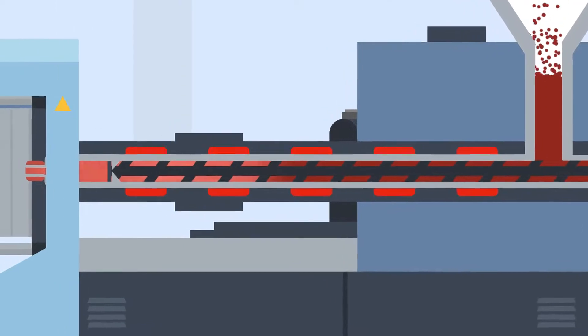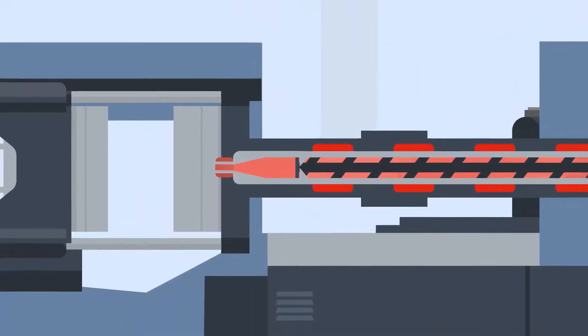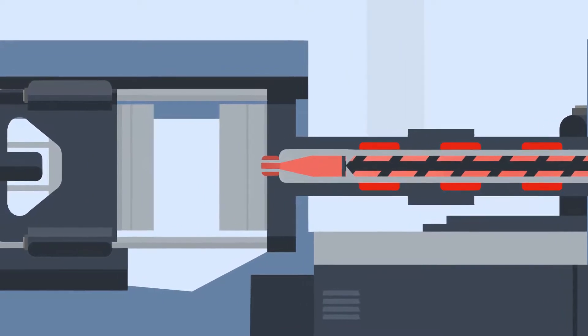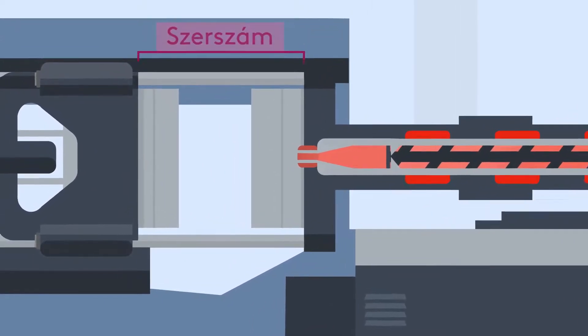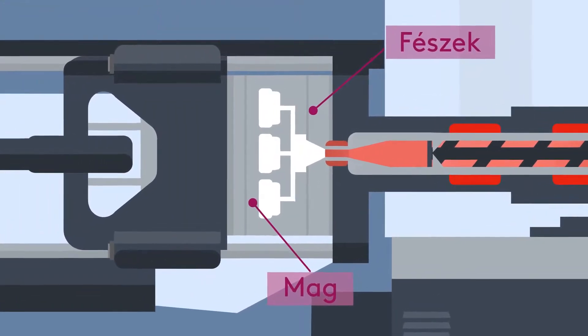The pellets are then heated within a temperature-controlled cylinder, called the machine barrel, until it is molten. Before the molten plastic is injected, the tool, which is usually made up of a fixed half called the cavity and a moving half called the core, closes.